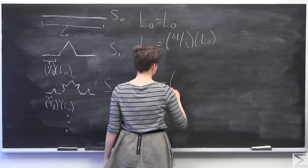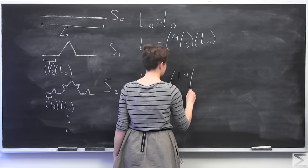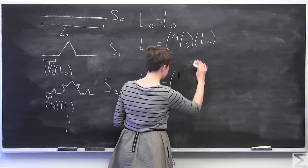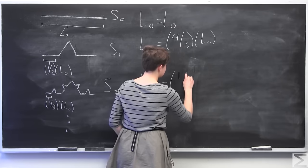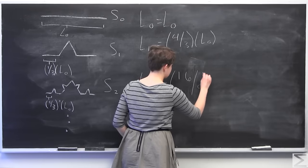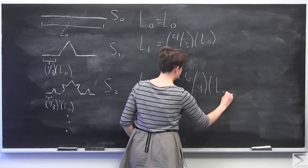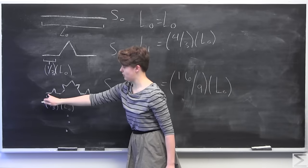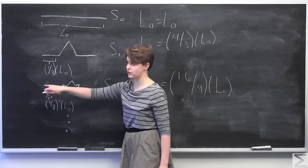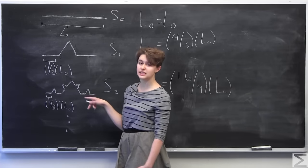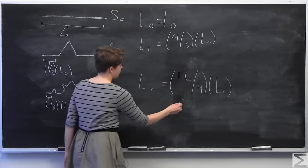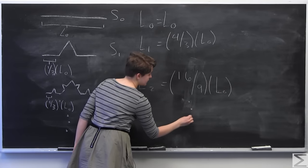So we're going to end up having 16 ninths times L0. See it's 16 ninths because the length of each one of these is one third times one third, which is one ninth. So we have 16 of those one ninth length pieces. So we can go on and on. This iterates out until infinity.